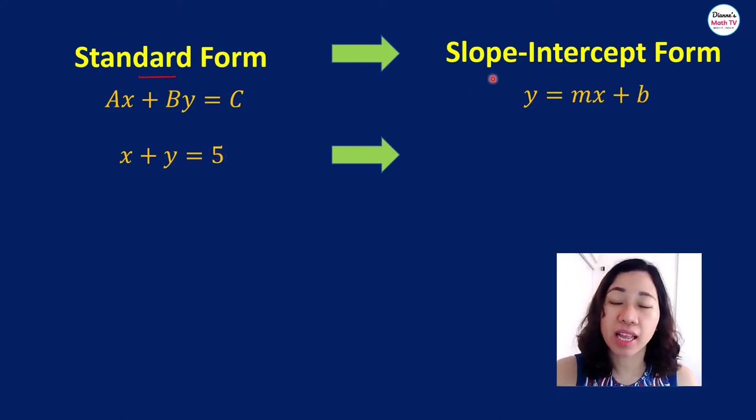We want to write it in slope-intercept form. In slope-intercept form, look at how it looks like. Your y is on one side of the equation and then the x and the constant appears on the other side. So basically, our goal here is to isolate y. Just isolate y and then put the others on the other side of the equation.